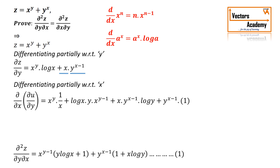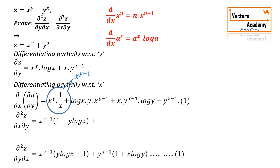This simplifies so that x raised to y minus 1 is common in the first two terms, and y raised to x minus 1 is common in the next two terms. Taking these common factors out, we get the right-hand side. Comparing equation 1 and equation 2, we can see that the left-hand side equals the right-hand side, completing the proof.